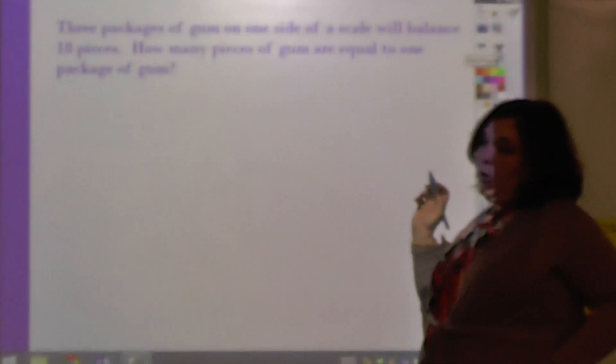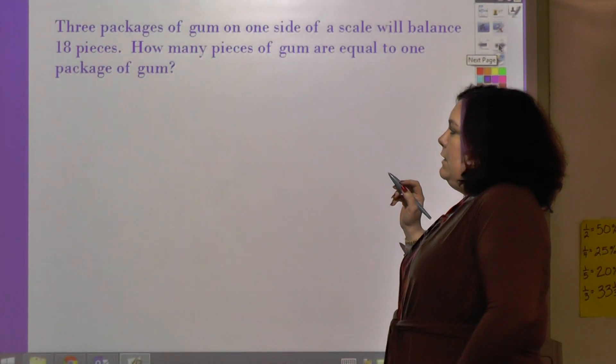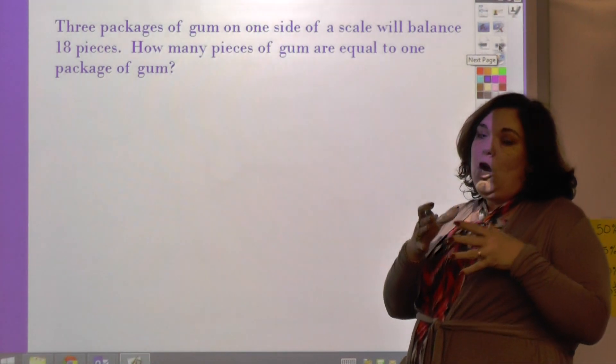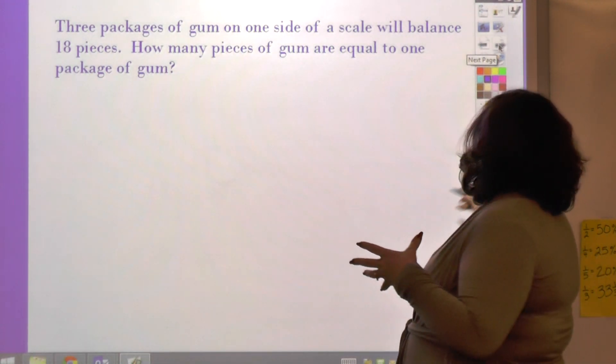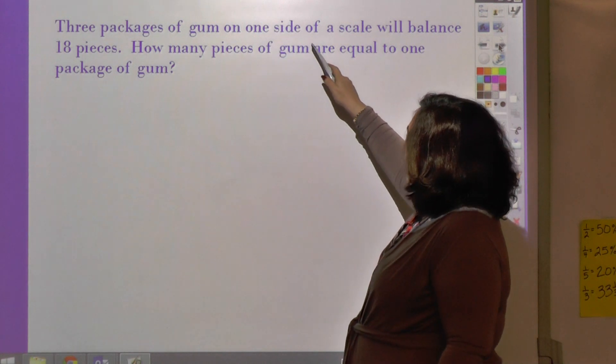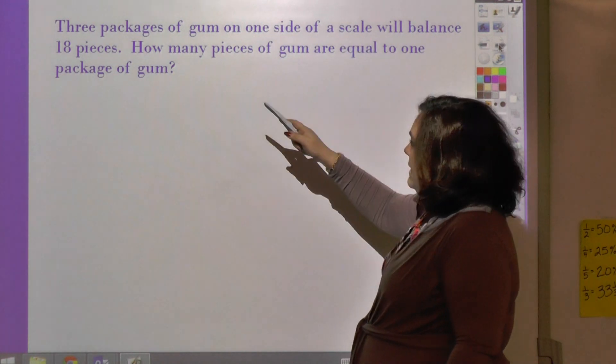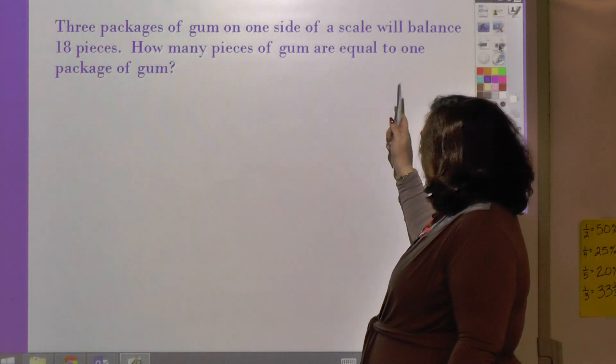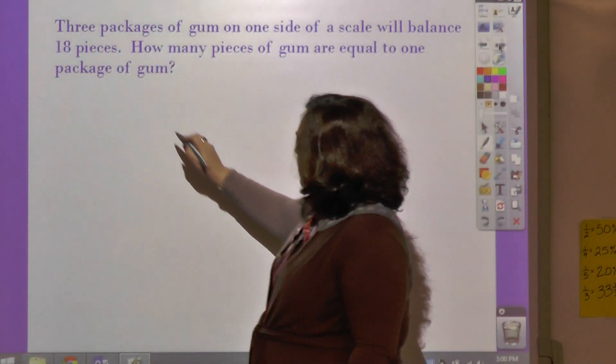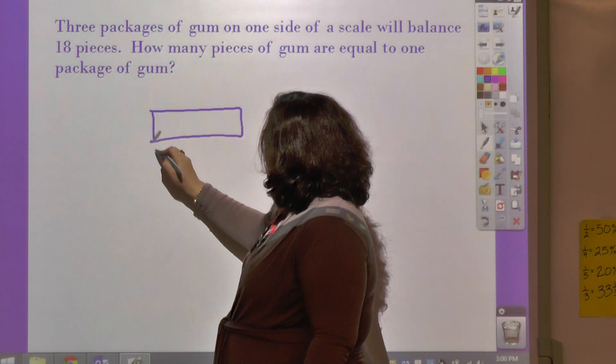So now you're going to see word problems. This says 3 packages of gum. Now, packages are going to be your x. Let me read through it first: 3 packages of gum on one side of the scale will balance 18 pieces. How many pieces of gum are equal to one package of gum?